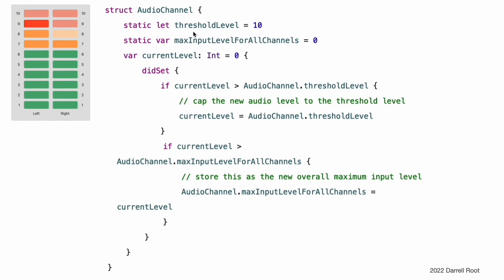The first, thresholdLevel, defines the maximum threshold value an audio level can take. This is a constant value of 10 for all AudioChannel instances. If an audio signal comes in with a higher value than 10, it will be capped to this threshold value. The second type property is a variable stored property called maxInputLevelForAllChannels. This keeps track of the maximum input value that has been received by any AudioChannel instance, and starts with an initial value of 0.